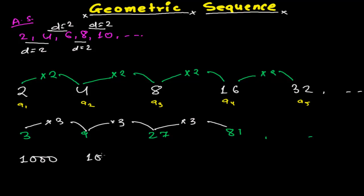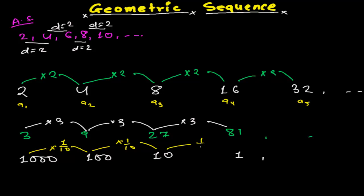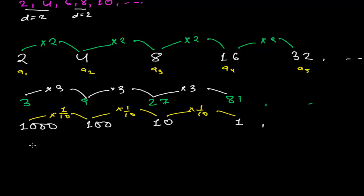One more example: suppose I have 1000, 100, 10, 1 and so on. Here, multiplying the first term by 1/10 gives the second term (100). Multiplying the second term by 1/10 gives the third term (10), and multiplying the third term by 1/10 gives the fourth term (1), and so on.